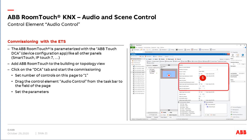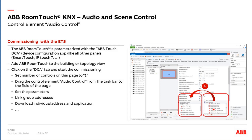Via drag and drop we take the Audio control from our taskbar and add it to the page. The next step is to click on the page — it turns orange — and then set all the parameters on the right side: how many sources or playlists we want to control, whether to use shuffle mode, and so on. Then we link the group addresses inside the DCA app by clicking on the RoomTouch device to get all group objects of this audio control element, dragging and dropping group addresses from the right side. Finally, download the individual address and application.